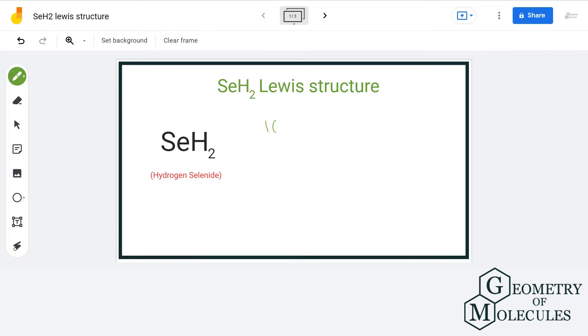We have one selenium atom with six valence electrons and two hydrogen atoms having one valence electron each. That gives us a total of eight valence electrons.